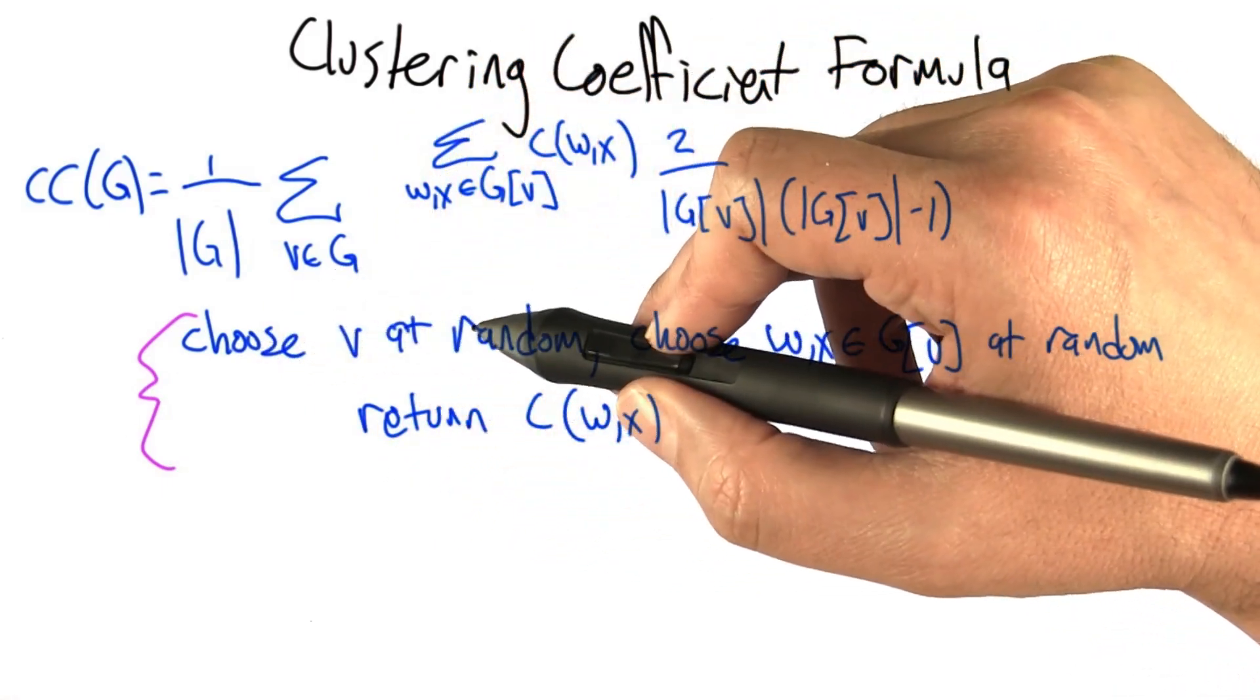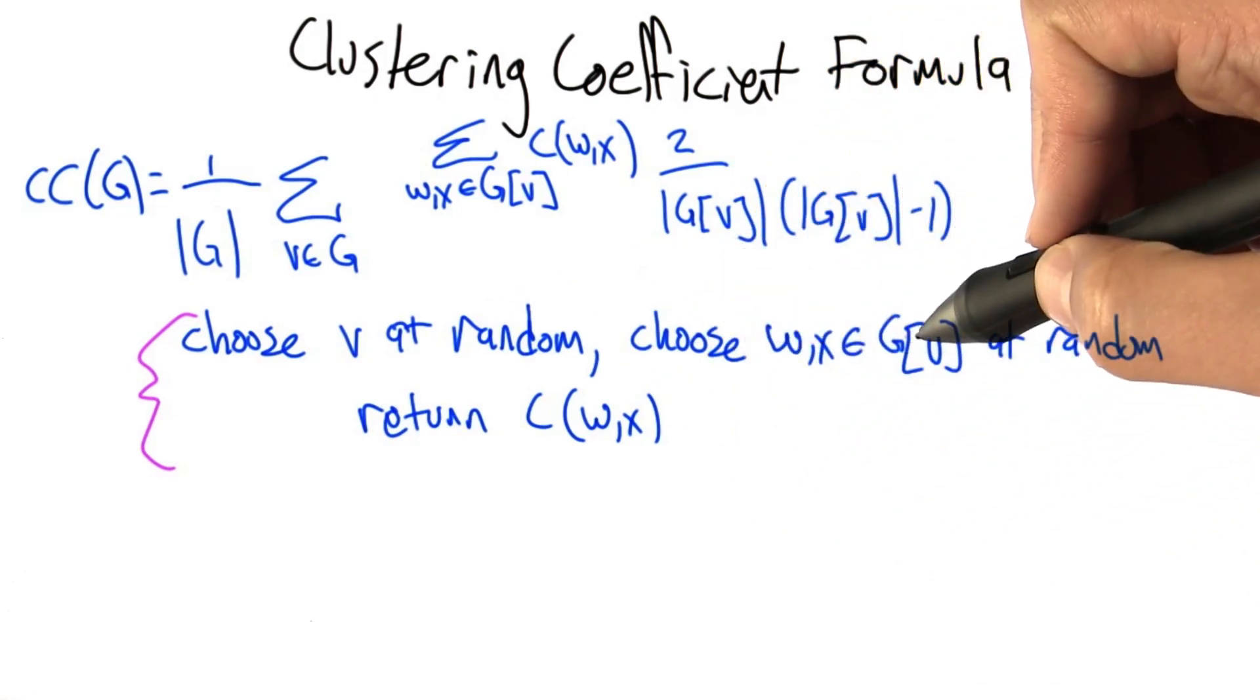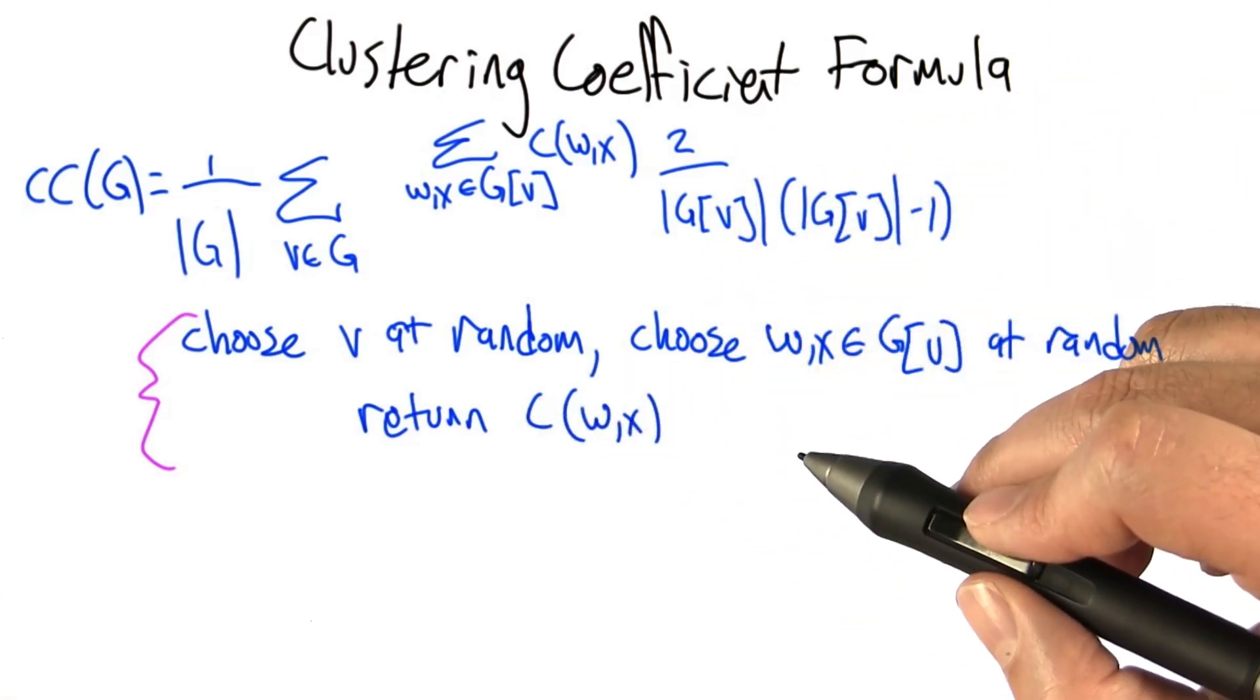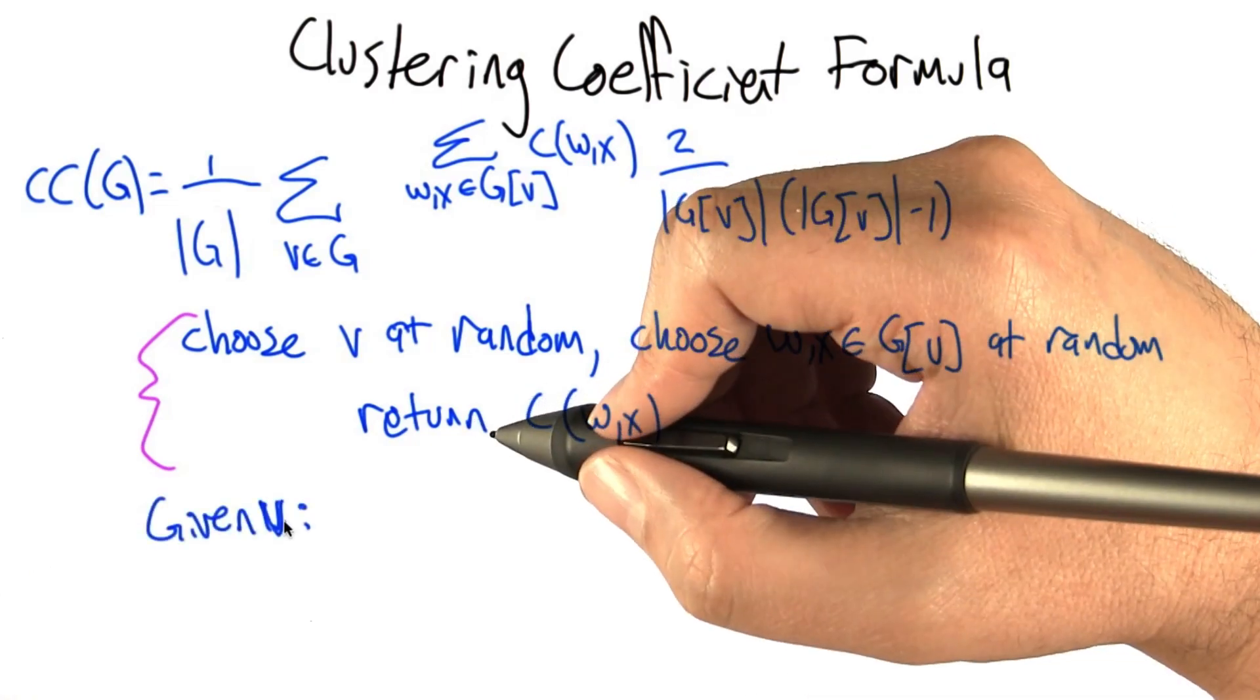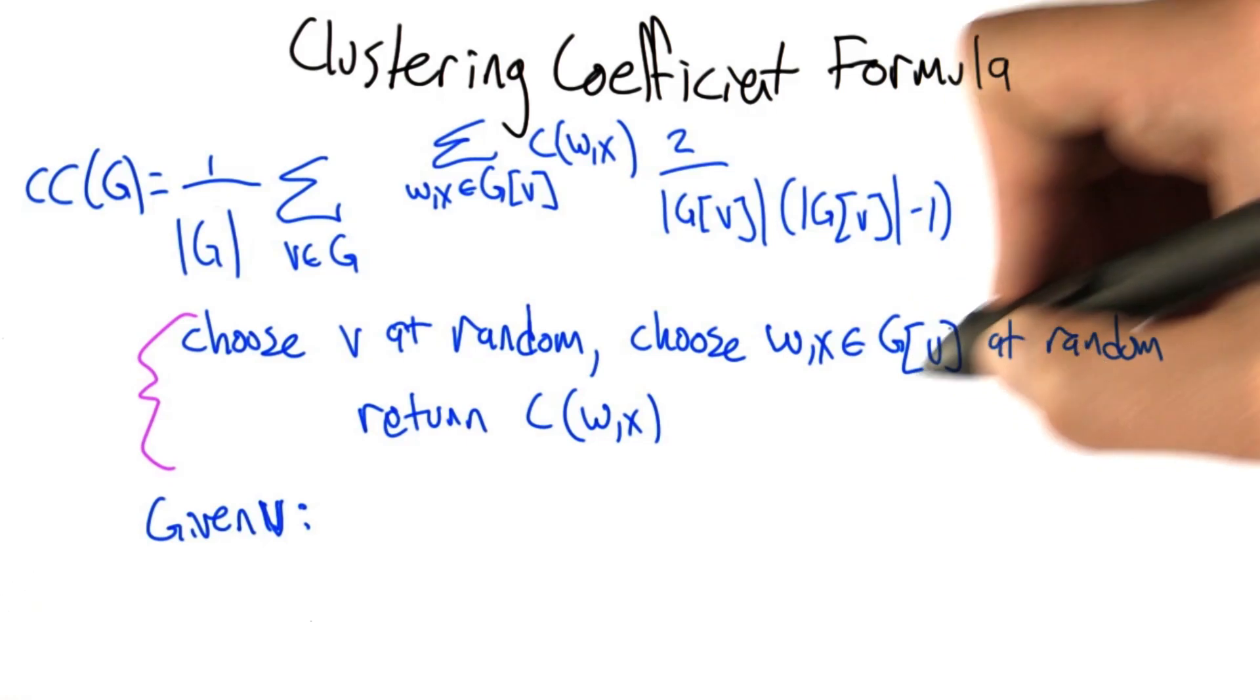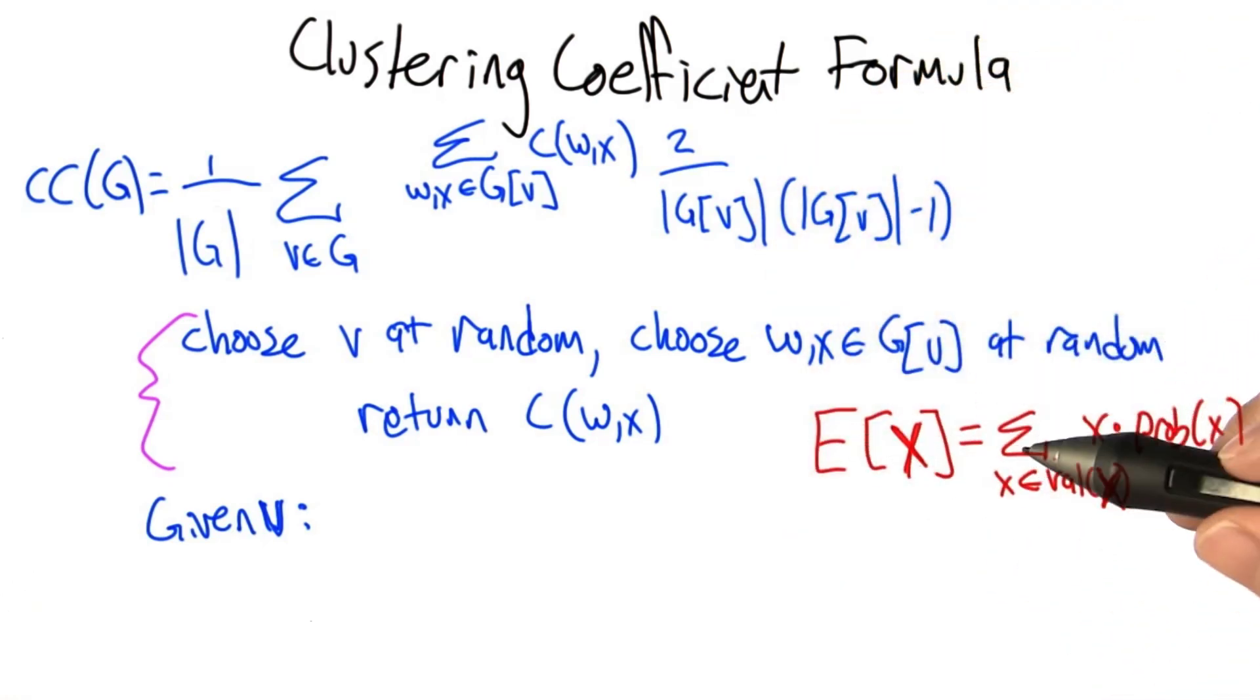I want you to think about this random process. Imagine that we choose a v at random from anywhere in the graph, and then we choose a pair of neighbors of that particular chosen node v completely at random from the graph, and then we return either 1 or 0 depending whether those two nodes are connected. What is the average value of this quantity? And remember the average we're taking here is average over these two sources of randomness, that we're randomizing over all nodes in the network and we're randomizing over all pairs.